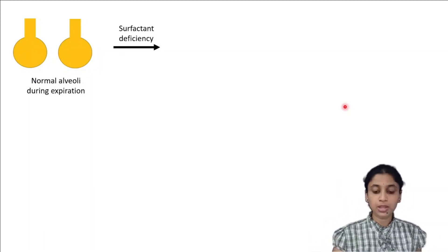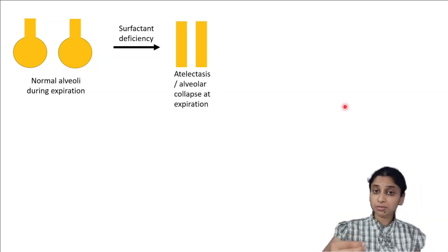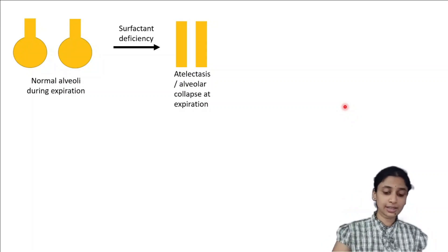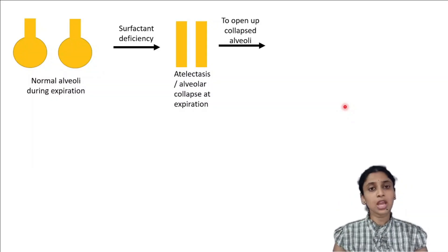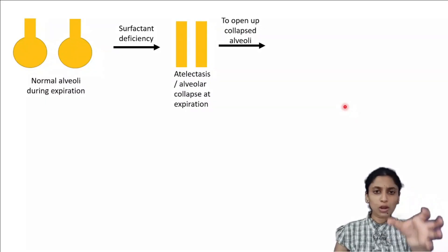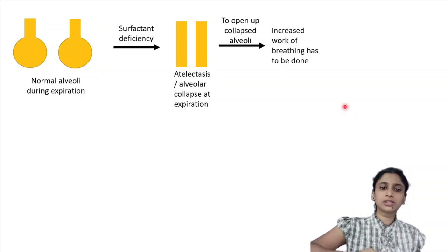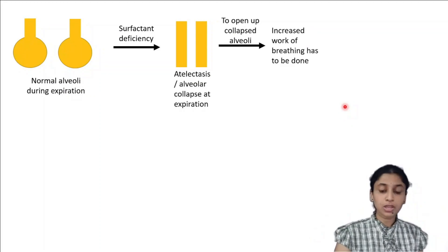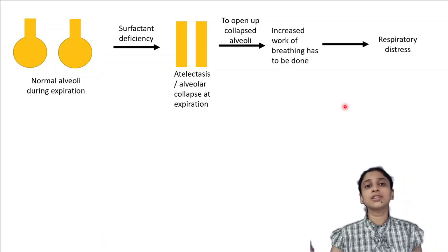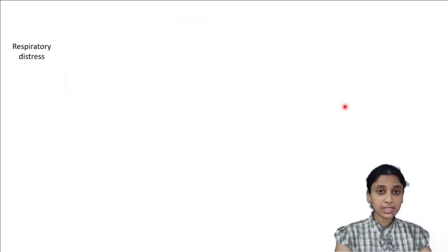As a result of which there will be collapse of the lungs. Collapse of the lungs is nothing but atelectasis. Atelectasis happens in prematurity due to the deficiency of surfactant. Now in order to open up these collapsed alveoli, I have to put in extra efforts, extra breathing efforts in order to open it up. So this eventually results in respiratory distress.